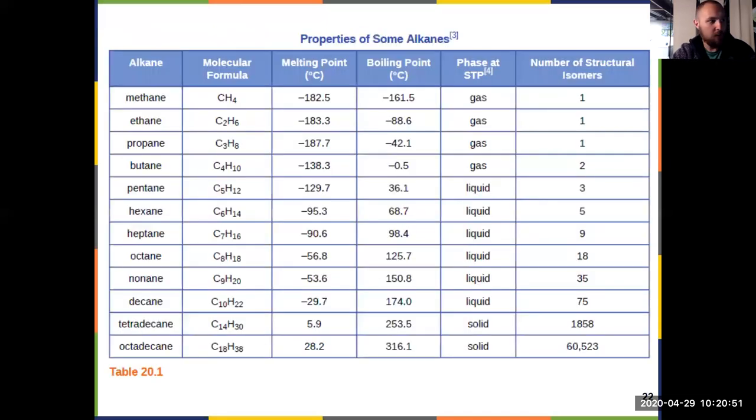So here's another key idea that you should know. The first six names, starting with one carbon, which is methane, two carbons, ethane, three propane, four butane, five pentane, six hexane. If you continue to organic, you'll be expected to know more. But at this level, you should know those first six.